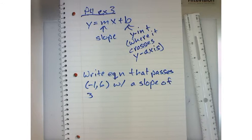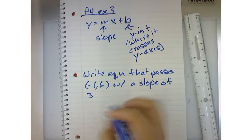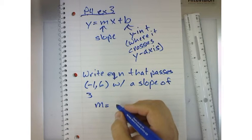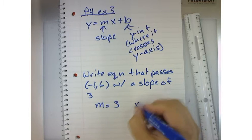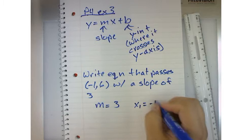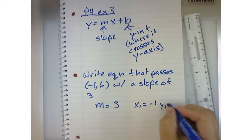Well, this is kind of easy to do. The slope is m, right? So m equals three, x sub one equals negative one, and y sub one equals six.